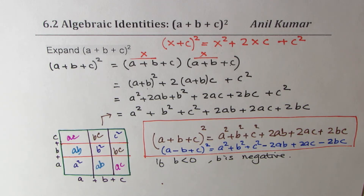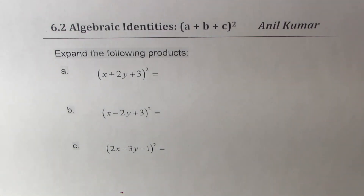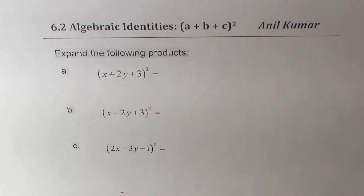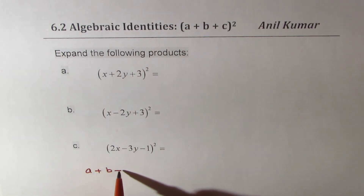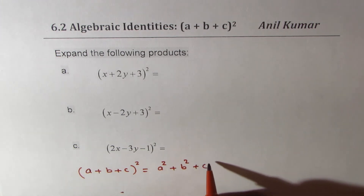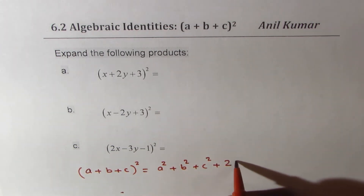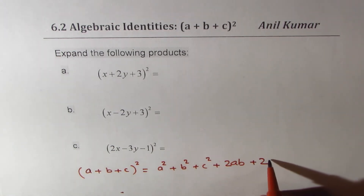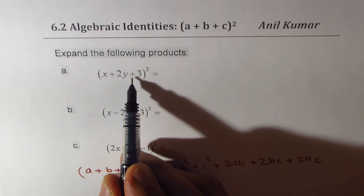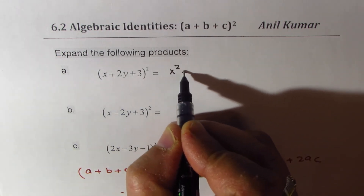With some practice questions that concept will be absolutely clear. Here are three practice questions for you to understand the identity (a+b+c)² = sum of their squares plus twice the sum of each pair. The order doesn't matter. Let's begin: for (x+2y+3)², we get x² plus (2y)² plus 3²...